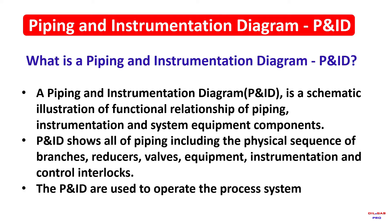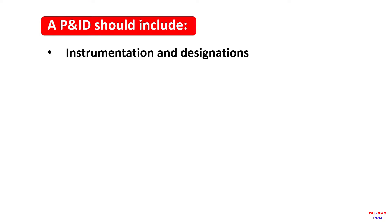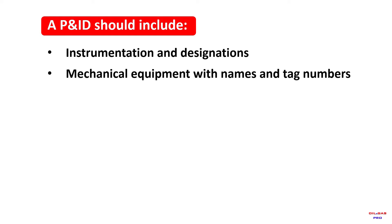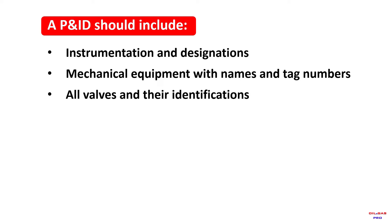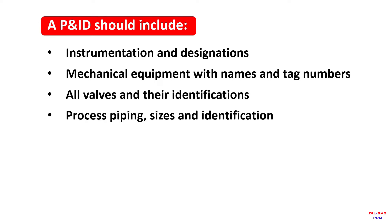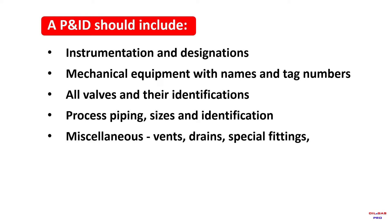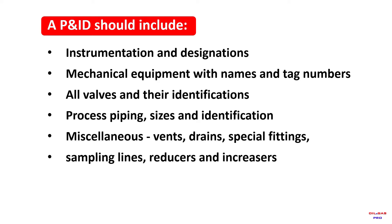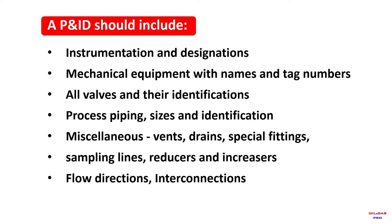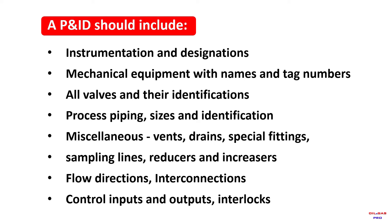The P&ID is used to operate the process system. The P&ID should include instrumentation and designation, mechanical equipment names and tag numbers, all valves and their identifications, process piping services and identification, miscellaneous vents, drains, special fittings, sampling lines, reducers, flow directions, interconnections, and control inputs and outputs interlocks.